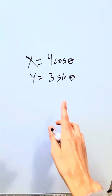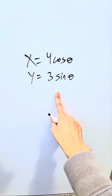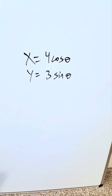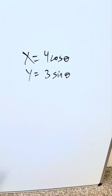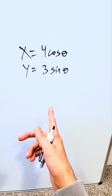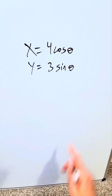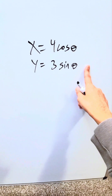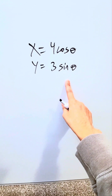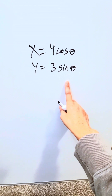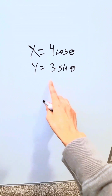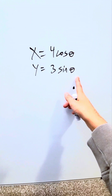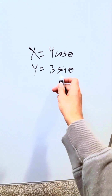If I were to present you both of these parametric equations and ask you to determine the area of the polygon represented by these equations, how would you proceed? x is equal to 4 cosine theta, y is equal to 3 sine theta. These are parametric equations — you have three variables: x, y, and your third variable, your parameter theta. How do you proceed?